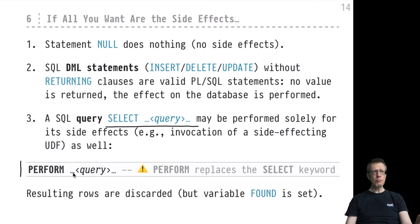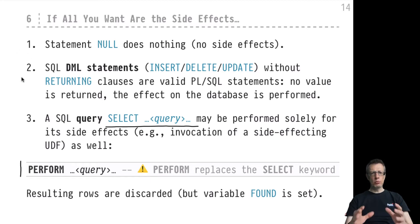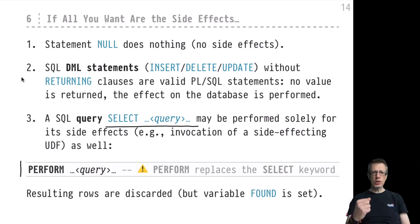The query would be executed, and any functions evaluated during execution would be invoked — perhaps these functions have side effects that hit the database. But otherwise all of the returning values and returned rows are discarded and no assignment to variables will happen. So those are the different possibilities to perform side effects in this statement-based imperative style of programming.